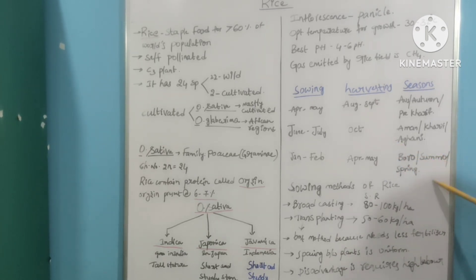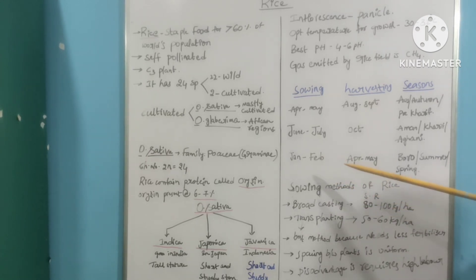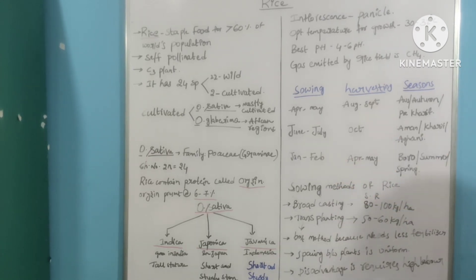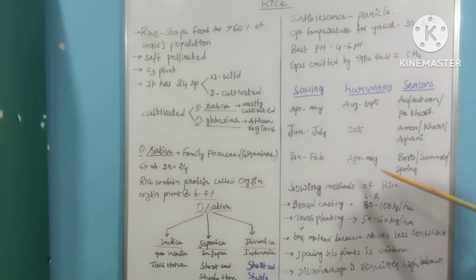Boro or Summer or Spring should be sown in January or February, and the harvesting should be done at April or May.